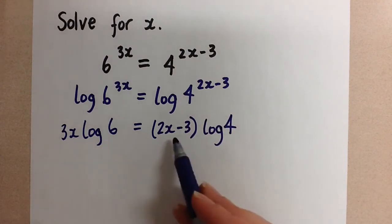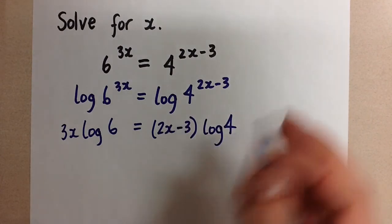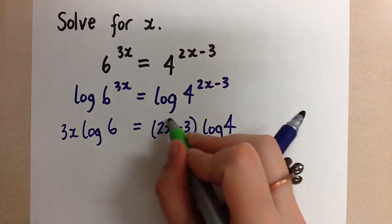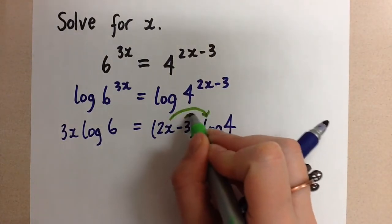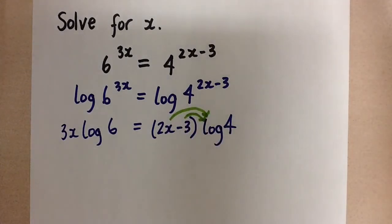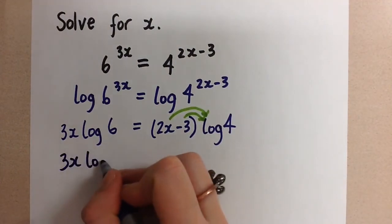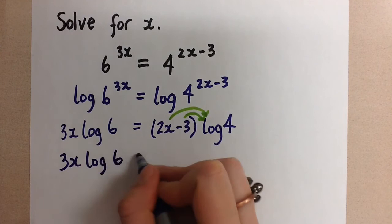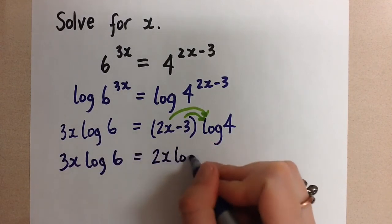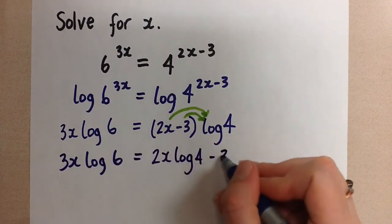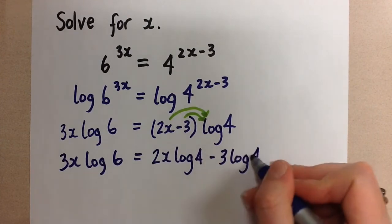So I have an x on this side, and I have an x here. I'm just going to distribute and multiply the two terms in the brackets with that log 4. To simplify, our next line, 3x log 6 equals 2x log 4 minus 3 log 4.